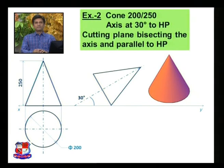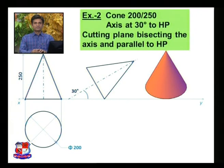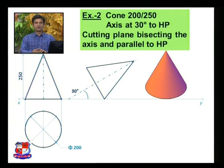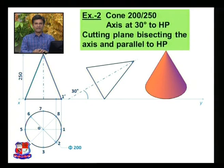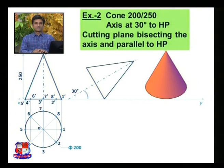Name the end points and divide the top view circle into 8 equal parts. Name the points 1, 2, 3, 4, 5, 6, 7, and 8 on the outer periphery of the cone — this is an imaginary division of the cone. The apex point is O. From all end points draw vertical lines and name the points in the front view: 1 dash and 8 dash are on the same point, 2 dash; 3 dash and 7 dash are here; 4 dash and 6 dash; and 5 dash.